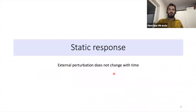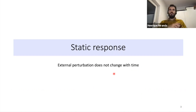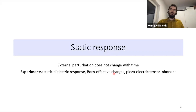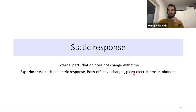I split this talk into two types of linear response. One is static response, where the external perturbation does not change with time. The other is dynamic response, where the perturbation is allowed to change with time. Experimental examples of static perturbations include dielectric response, born effective charges, and piezoelectric tensors — all measurable quantities.